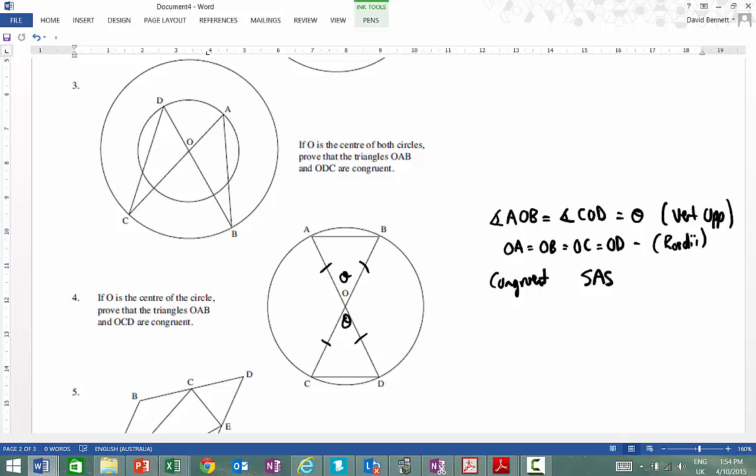So get the idea about some of these proofs in terms of what we're doing here. Obviously if we were looking at this one here. Now obviously O is the centre of both the circles. Prove that the triangles OAB and ODC are going to be congruent. So I won't even do the working out, just do the thinking. These are going to be equal because they are radii. These are vertically opposite. These particular angles in the centre there are vertically opposite. So that there could be theta, that could be theta.